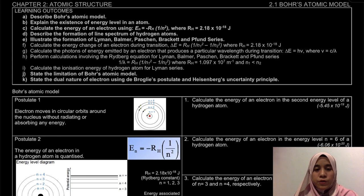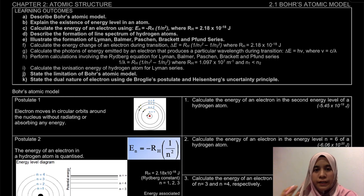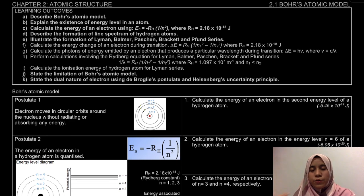Bohr's Atomic Model is mostly applied for the hydrogen atom or any one-electron atom. The most famous and most basic one-electron atom is hydrogen.